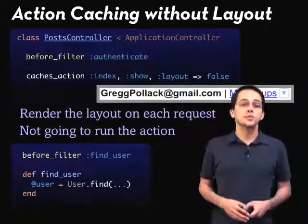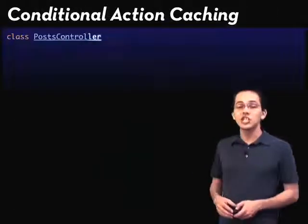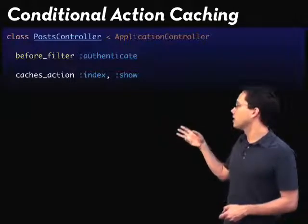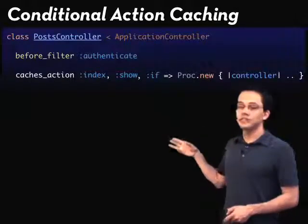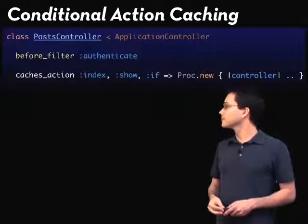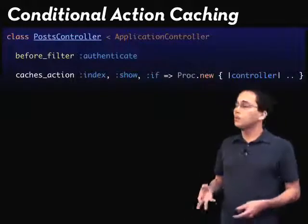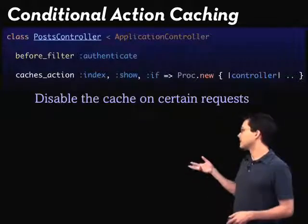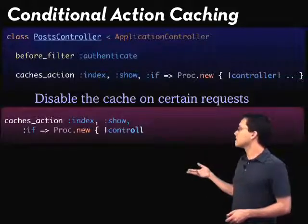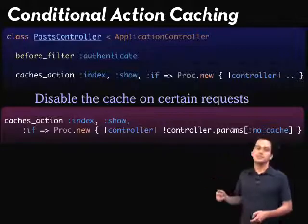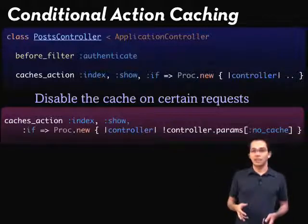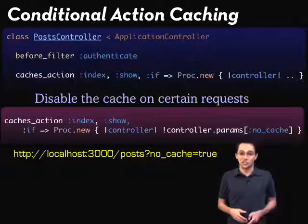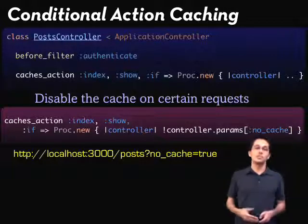Another useful feature of action caching is the ability to have conditional action caching. You could have caches_action :index, :show and then put an if statement inside of a proc. This is useful if you want to disable the cache on certain requests. If the proc returns false, it's not going to pull from the action cache at all — it's going to bypass the action cache altogether and load the page every time.